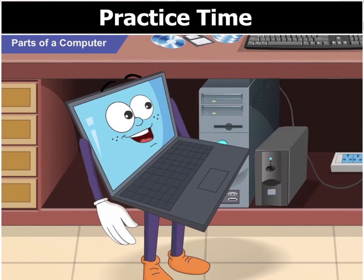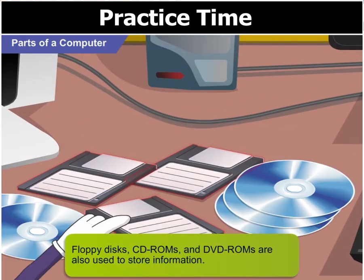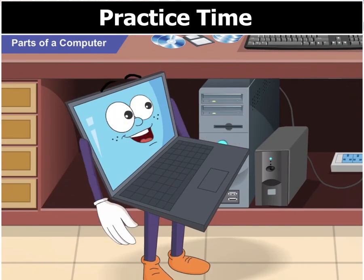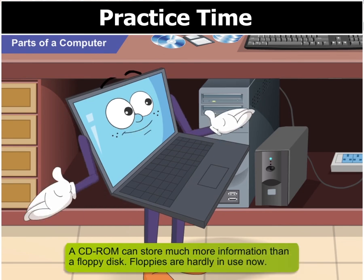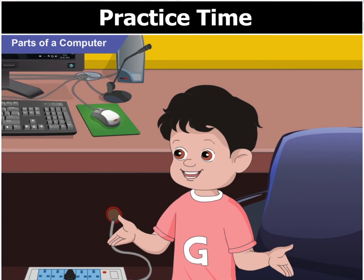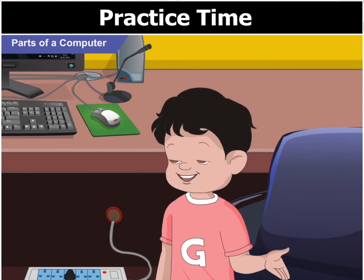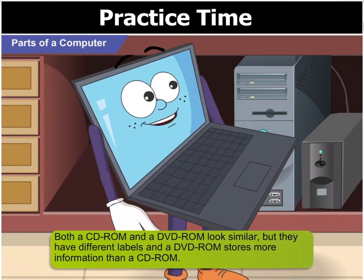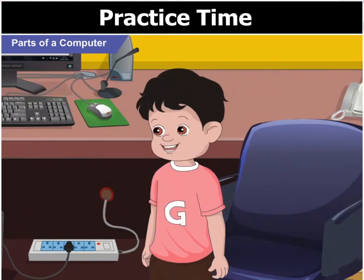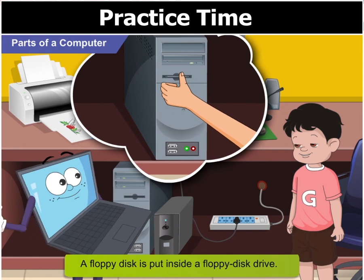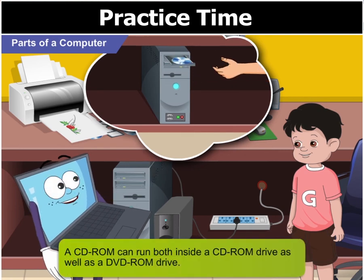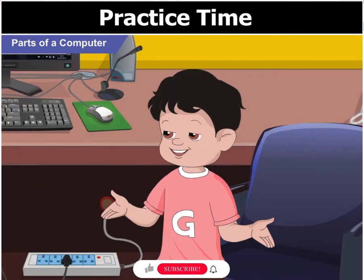These are also used to store information. These are floppy disks or floppies, these are CD-ROMs, and these are DVD-ROMs. The difference between them and the hard disk is that you can easily carry these around with you. A CD-ROM can store much more information than a floppy disk. Floppies are hardly in use now. A DVD-ROM stores much more information than a CD-ROM. You put a floppy disk inside a floppy disk drive, while a DVD-ROM is placed inside a DVD-ROM drive. A CD-ROM can run both inside a CD-ROM drive as well as a DVD-ROM drive.